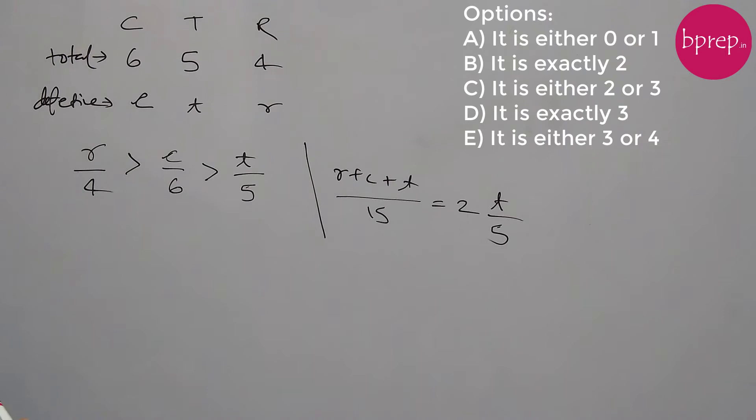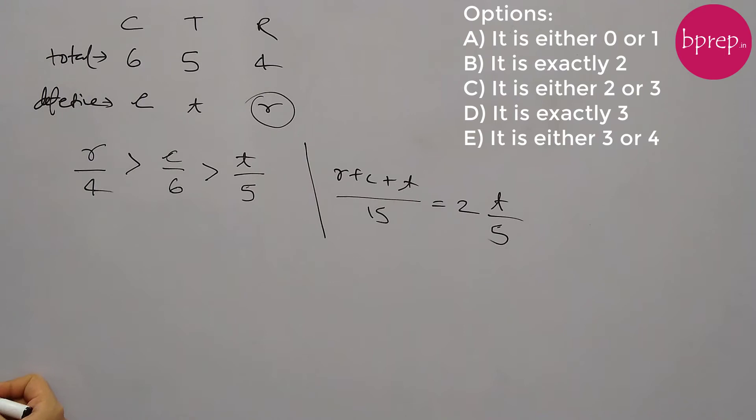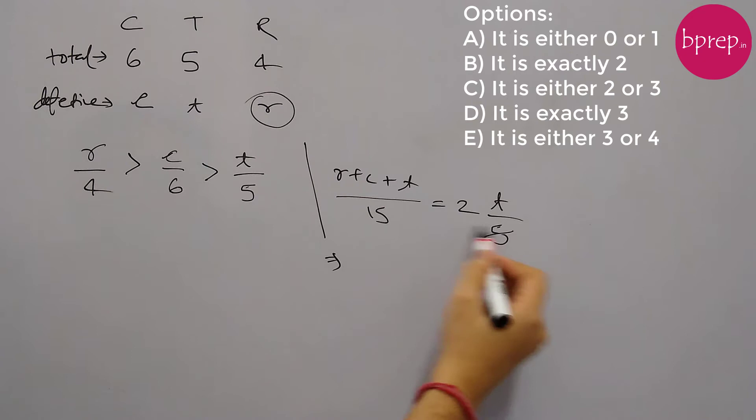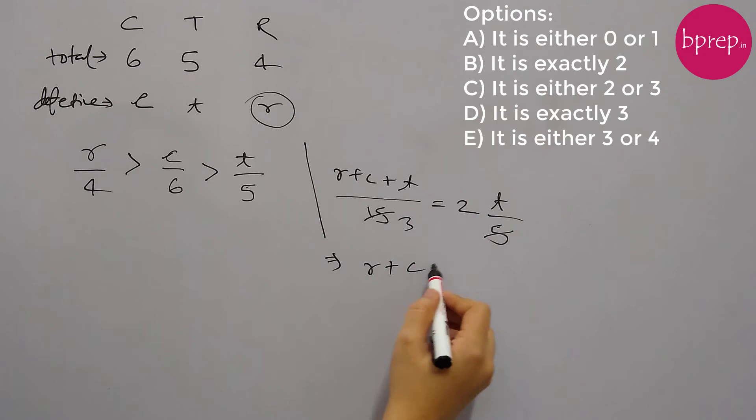So what best can be said about the number of defective rubber balls in the box? We need to find out the best possible value for r. If we solve this equation, 5, 3, 6t and 1t will be subtracted, so we will have r plus c equals to 5t. This is the key equation we are working with.